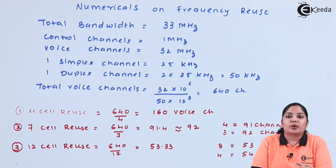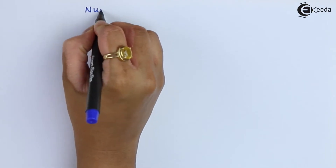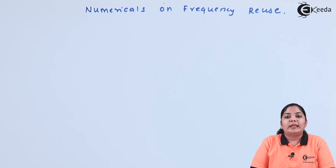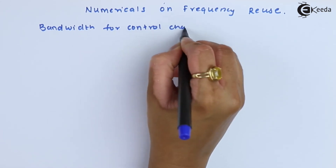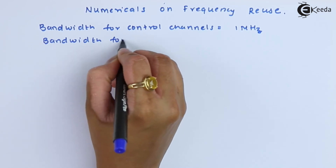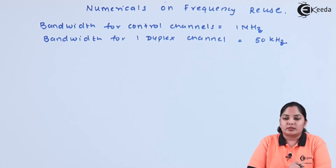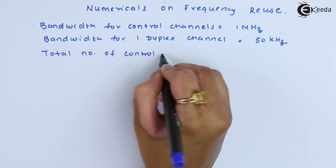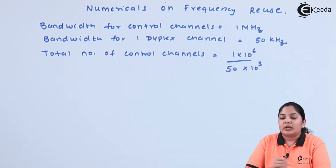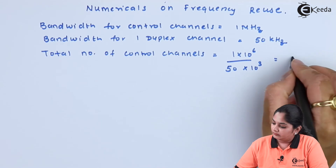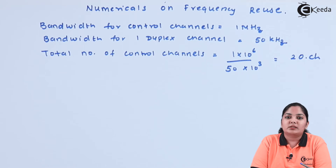Next we will see how the control channels are distributed. Since 1 MHz is given for control channels, we will first find out how many duplex channels can be taken from that 1 MHz. The bandwidth for one duplex channel is 50 kHz. The answer here is 20 channels, so we have 20 control channels to distribute.